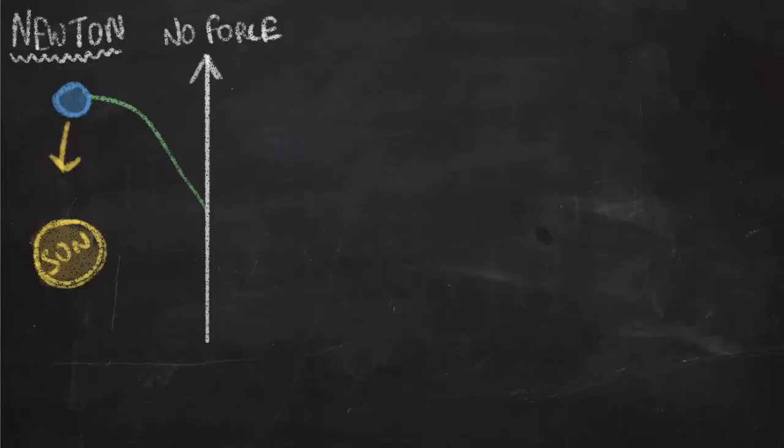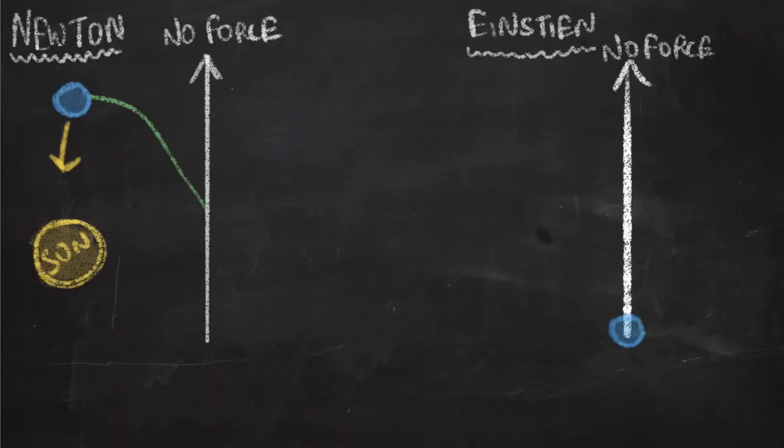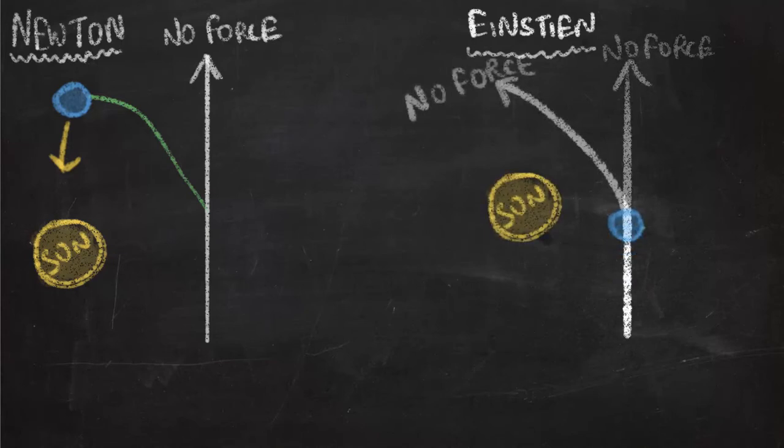So if we go back to our previous example, again, without the Sun, the Earth would just be traveling in a straight line. But now, according to Einstein, even with the presence of the Sun, there is no force acting on the Earth. Instead, the Sun just bends space and time. And therefore, the Earth just keeps traveling along the new bent straight line. And that's how the Earth orbits the Sun. So Einstein says gravity is no force at all, but instead think of gravity as a bending of space and time.